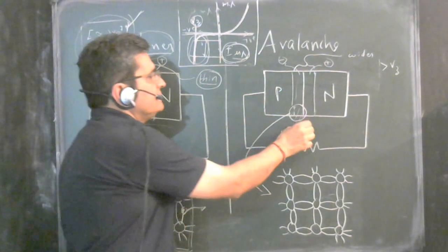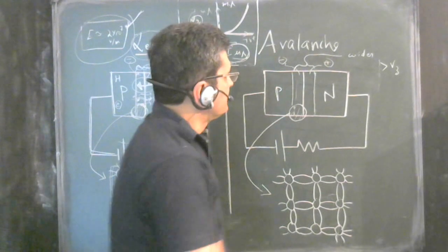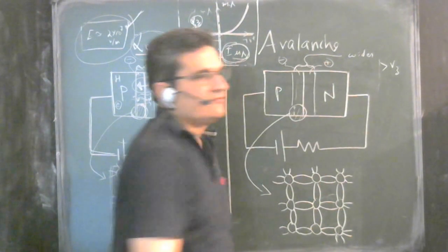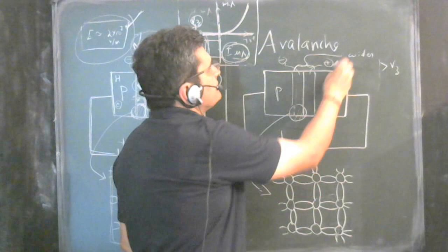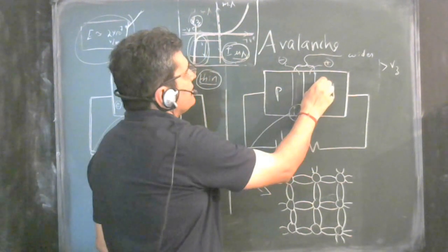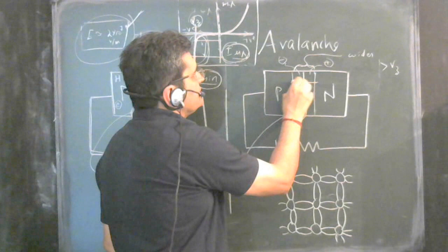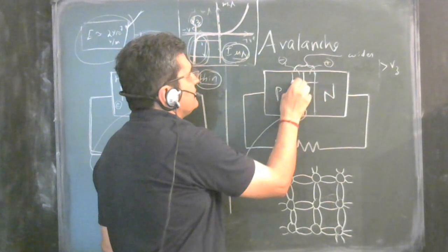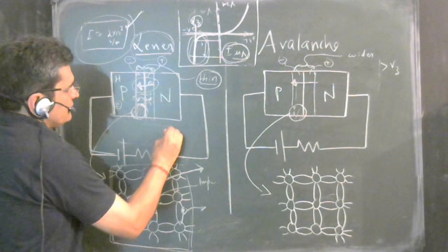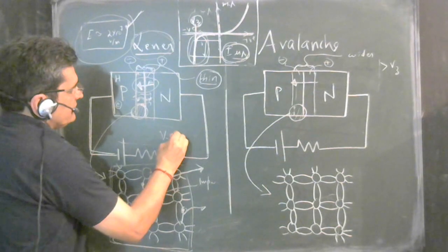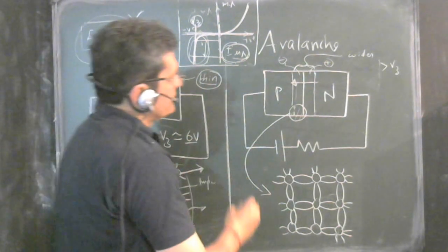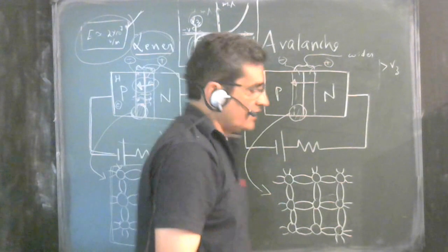In the case of avalanche breakdown, the diode is not so heavily doped, the depletion region is not so thin, and we don't have as high an electric field as in Zener breakdown. One more distinction: Zener breakdown occurs at around 6 volts, whereas avalanche breakdown needs a higher voltage than the Zener voltage.